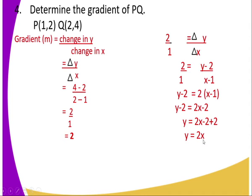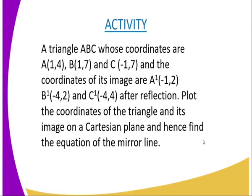Activity for today: a triangle ABC whose coordinates are A(1, 4), B(1, 7), and C(−7, 1), and the coordinates of its image are A'(−1, 2), B'(−4, 2), and C'(−4, 4) after reflection. Plot the coordinates of the triangle and its image on a Cartesian plane and hence find the equation of the mirror line.